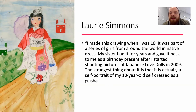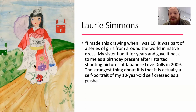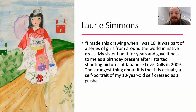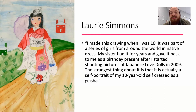Here's one person we haven't learned about. Her name is Lori Simmons. She said, 'I made this drawing when I was 10. It was part of a series of girls from around the world in native dress. My sister had it for years and gave it back to me as a birthday present after I started shooting pictures of Japanese love dolls in 2009. The strangest thing about it is it is actually a self-portrait of my 10-year-old self dressed as a geisha.' This artist statement tells us what she made — a self-portrait of her 10-year-old self dressed as a geisha — and why she made it: she was studying a series of girls from around the world in their native dress.